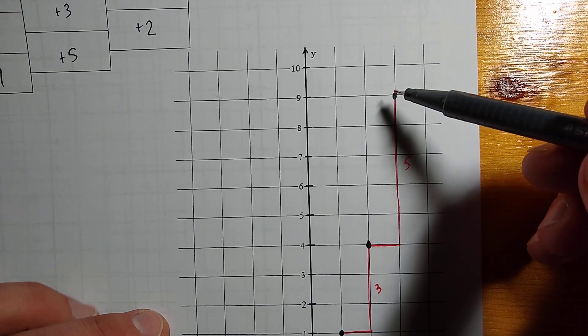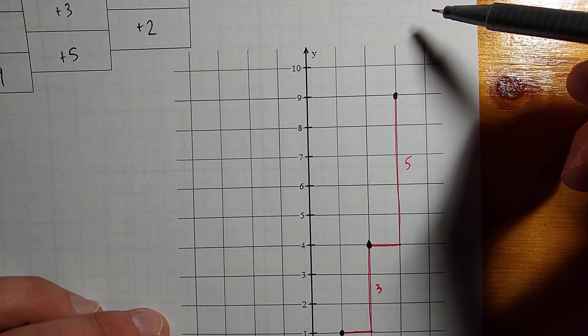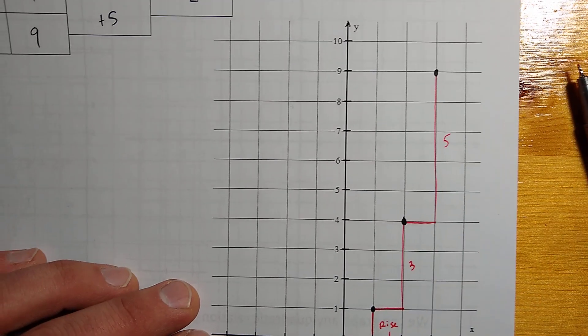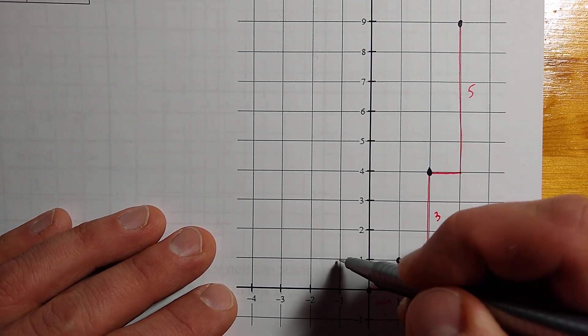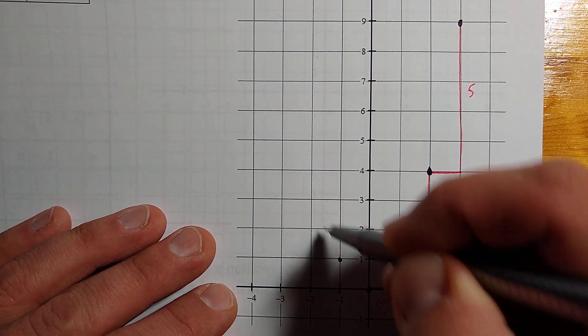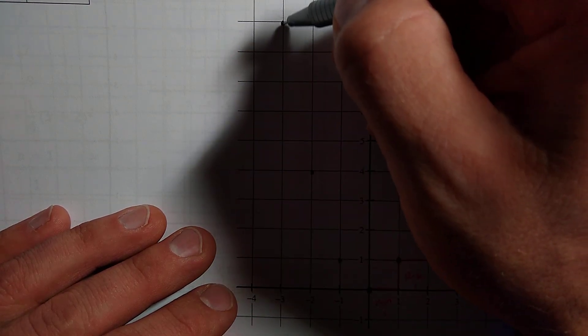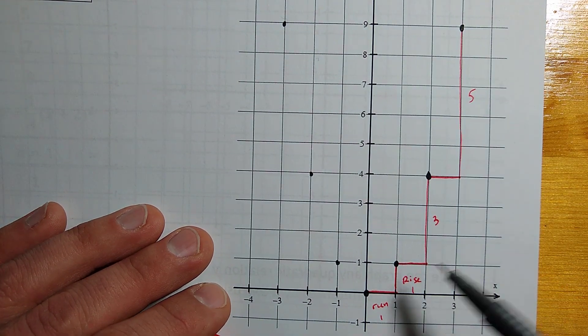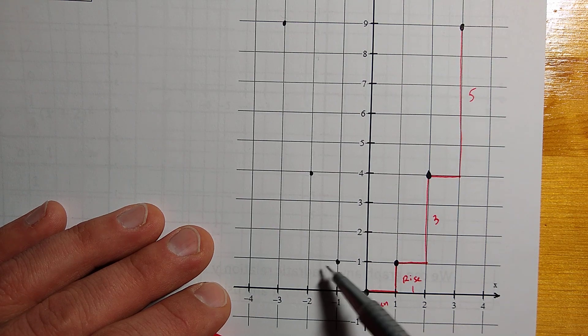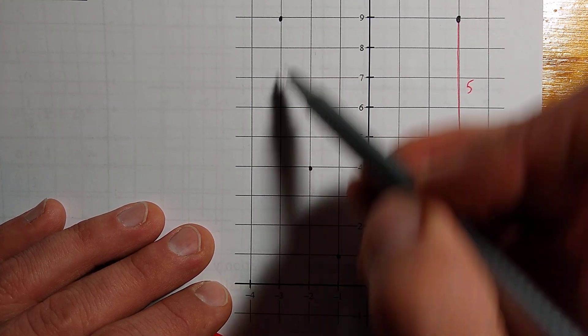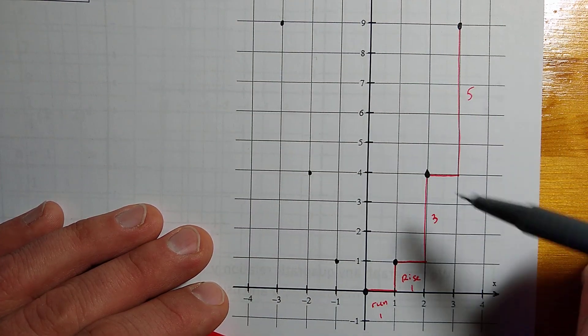And if we had more room on our graph, we could go over 1 and up 7, which would take us to the value of 16. I'm going to put all the mirror image points in here. 1, 3, 5. Over 1, up 1, over 1, up 3, over 1, up 5. And notice I'm moving to the left this time.